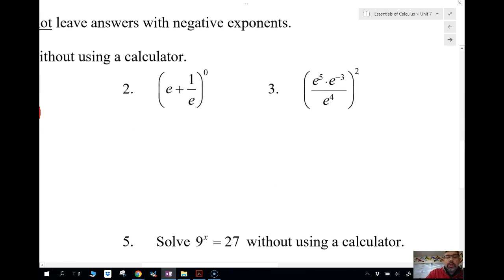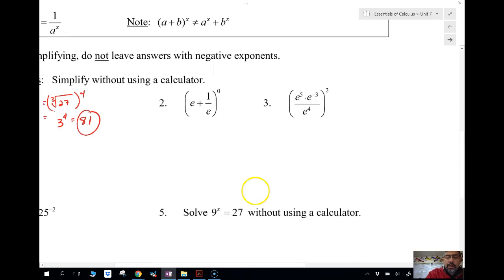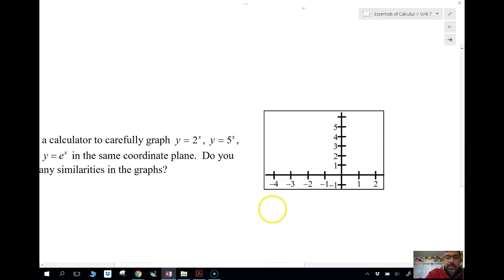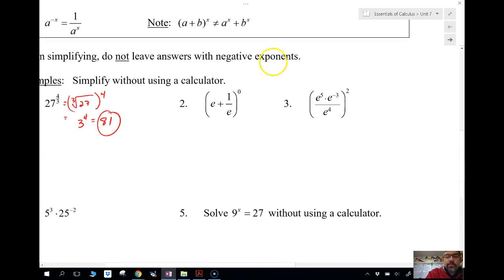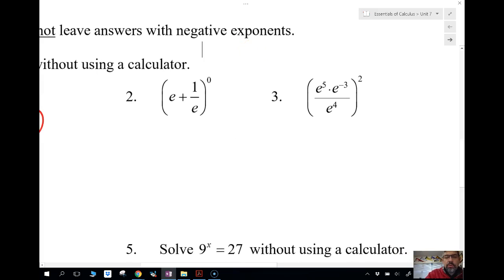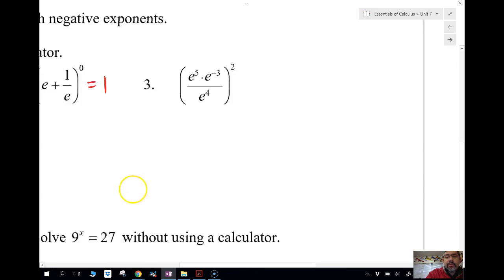E plus 1 over E. Now, E is a number. It's approximately 2.7. So just remember that, and I have this down here somewhere on my next page. E is a number in between 2 and 3. I'll give you what it's about in just a second. But a number plus a number, these are both numbers, they're not variables, raised to the 0 power. Now, anything raised to the 0 power is just 1. So it's kind of a trick question there.